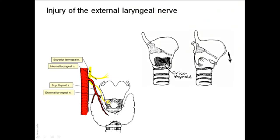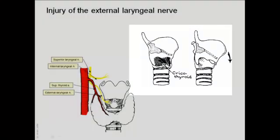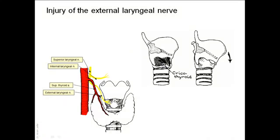The external laryngeal nerve supplies one intrinsic muscle of the larynx — the cricothyroid muscle. All other intrinsic muscles of the larynx are supplied by the recurrent laryngeal nerve. The cricothyroid muscle pulls the thyroid cartilage forward over the cricoid cartilage, tensing the vocal cords. Sectioning of the external laryngeal nerve will produce weakness and a low-pitched voice because the vocal folds cannot be tensed.